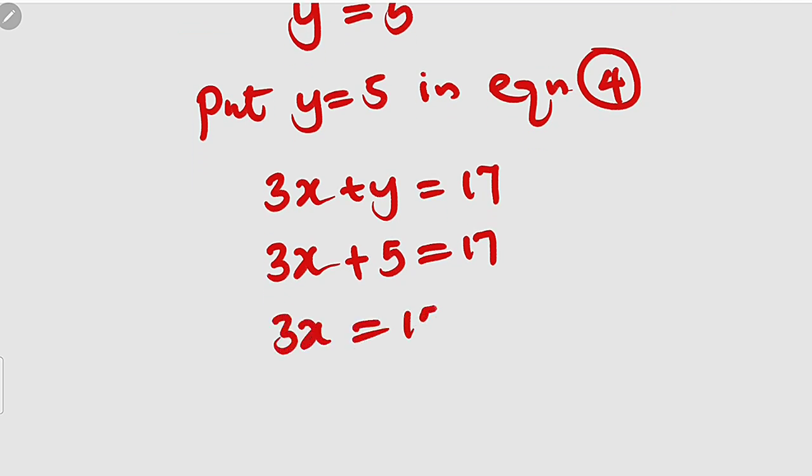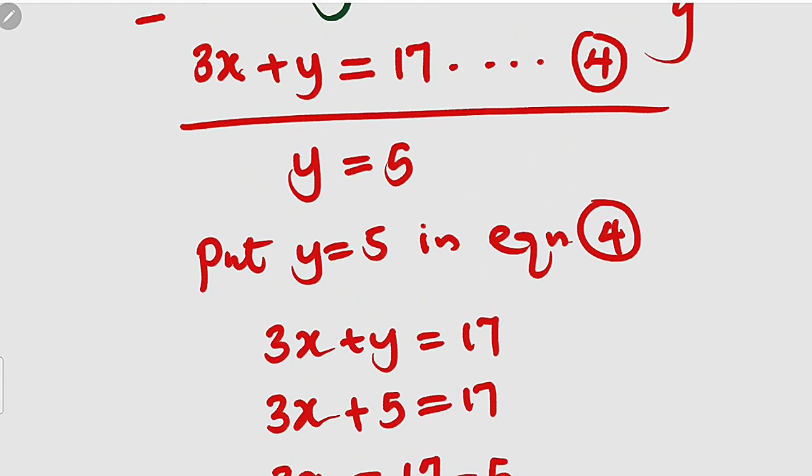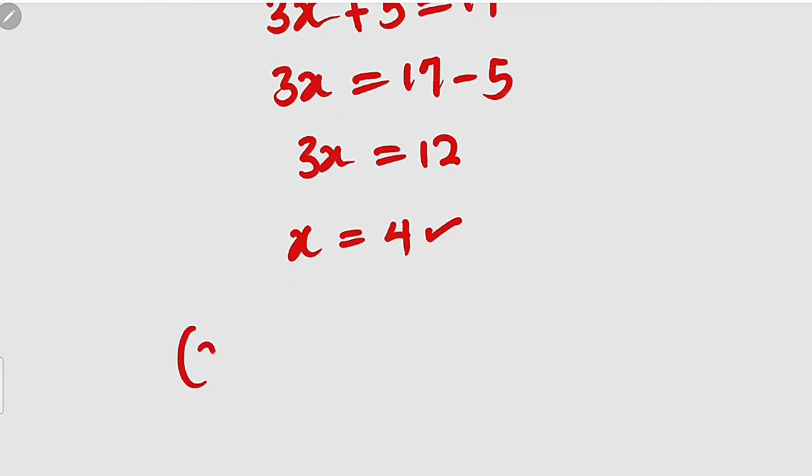3x equals 12. Divide both sides by 3. x will be equal to 4. Now you can see that x equal to 4 and y equal to 5. So the solution is x comma y equal to 4 comma 5.